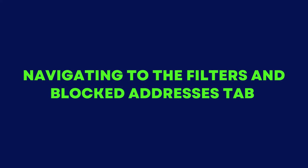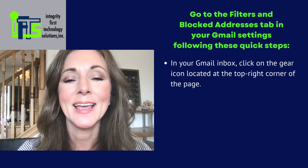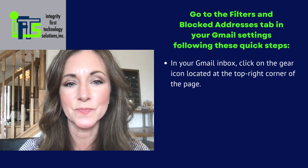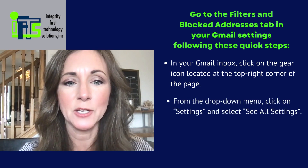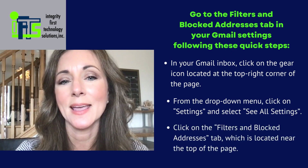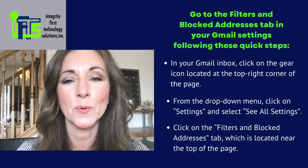Navigating to the filters and blocked addresses tab. The other way to prevent emails from being sent to spam is to go to the filters and blocked addresses tab in your Gmail settings, following these quick steps. Number one, in your Gmail inbox, click on the gear icon located at the top right corner of the page. Number two, from the drop down menu, click on settings and select see all settings. Number three, click on the filters and blocked addresses tab which is located near the top of the page. You will now see your Gmail account settings page where you can whitelist an email address through filters.